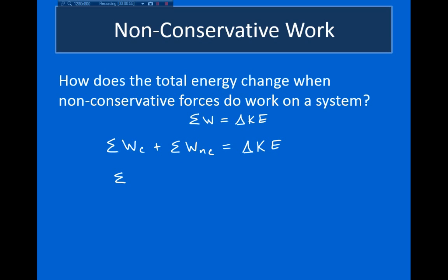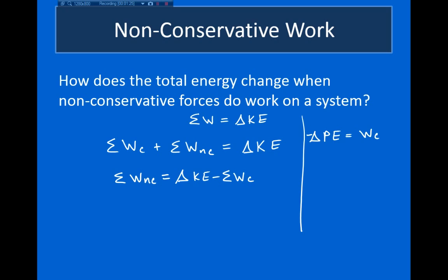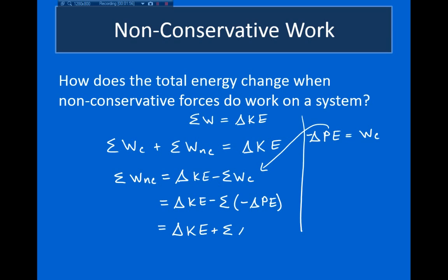I want to rewrite this to solve for the sum of work done by non-conservative forces. That's equal to the change in kinetic energy minus the work done by conservative forces. Now, if you remember when we talked about potential energy in the last video, we defined potential energy such that minus the change in potential energy equals the work done by the conservative force. So I'll plug that in: this becomes the change in kinetic energy minus the sum of negative changes in potential energy, which gives us the change in kinetic energy plus the sum of the changes in potential energy.